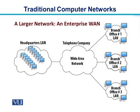This is the conceptual view of a WAN — a larger network representing an enterprise WAN. We have shown three different branch offices, and each branch office is running its own simple network. These three branch offices are then connected over a cloud, which we have labeled as the telephone company — our wide area network. Over this cloud, all three branch offices are linked to the headquarters LAN where multiple computers are located.